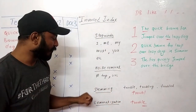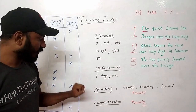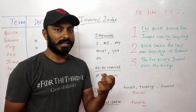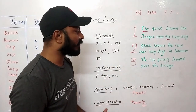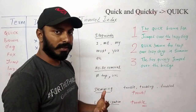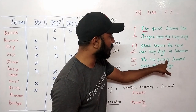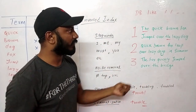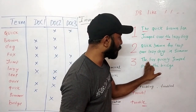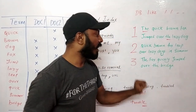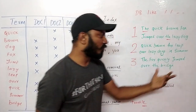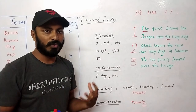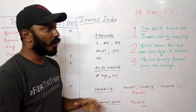Stemming is the process of removing suffixes to get the base or root word. In the case of 'quickly', the suffix is 'ly', so we get 'quick'. This is a rudimentary process — you simply remove the suffix without caring if the resulting word is a real meaningful word. For example, with 'trouble', 'troubling', and 'troubled', if we treat 'ling' and 'led' as suffixes, we might get 'troubl' — not exactly the word 'trouble'.